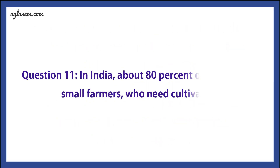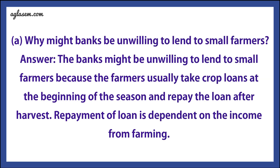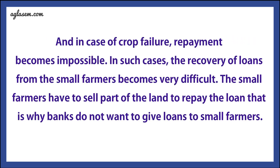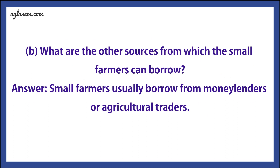Question 11: In India, about 80 percent of farmers are small farmers who need credit for cultivation. Part A: Why might banks be unwilling to lend to small farmers? Answer: Banks might be unwilling because farmers usually take crop loans at the beginning of the season and repay after harvest — repayment depends on farming income, and in case of crop failure repayment becomes impossible. Recovery of loans becomes very difficult, and small farmers may have to sell part of their land to repay. Part B: What are other sources from which small farmers can borrow? Answer: Small farmers usually borrow from money lenders or agricultural traders.